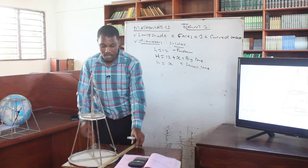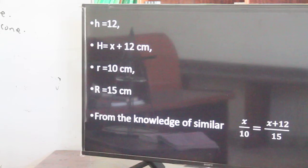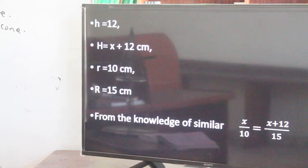So we have 12 cm, we have x plus 12 cm, and here we have radius 10 for the small cone at the top and radius 15 for the bigger cone at the bottom. From the knowledge of similarity, that is where I am going to start in the next part of the lesson. Just wait for the next part. Thank you very much.